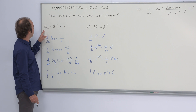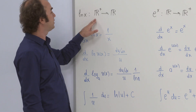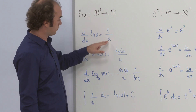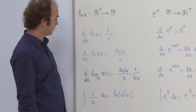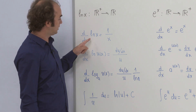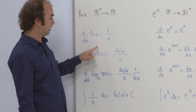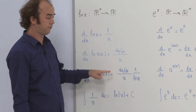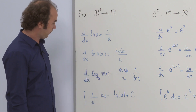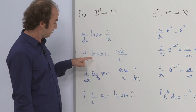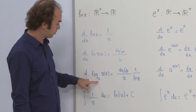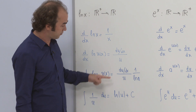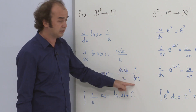First, remember that the ln function is defined over the positive real numbers to the set of real numbers. Its derivative is 1 over x — the derivative of ln(x) is 1 over x. If the argument is any function u(x), you differentiate it in the form u' divided by u. If the base is not e but another base a, it is differentiated as u' over u with a factor 1 over ln(a).